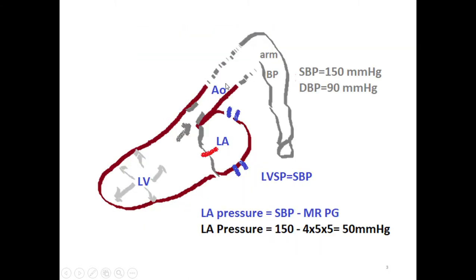Because the left ventricle and the aorta are a confined fluid system during systole, if we measure blood pressure on the arm, it equals the left ventricular systolic pressure. So in this case, systolic blood pressure is 150 mmHg, therefore left ventricular systolic pressure (LVSP) will be 150 mmHg.